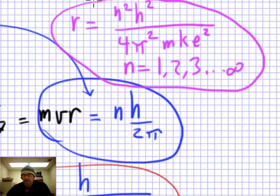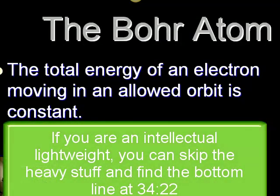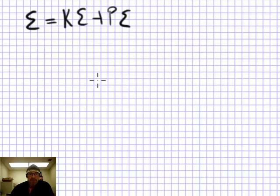Another postulate: the total energy of an electron in an allowed orbit is constant. Total energy equals kinetic energy plus potential energy. The potential energy equals the work required to move the electron from the nucleus to radius r against the electrostatic attraction. Work is force times distance: W = −(Ke²/r²) × r = −Ke²/r. So the potential energy is −Ke²/r.